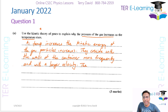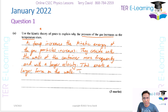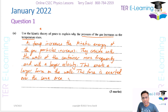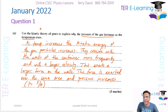This exerts a larger force on the walls. This force is exerted over the same area, and pressure increases. Remember, pressure is given by force divided by area. So these are the key elements that you require here in order to get the three marks.